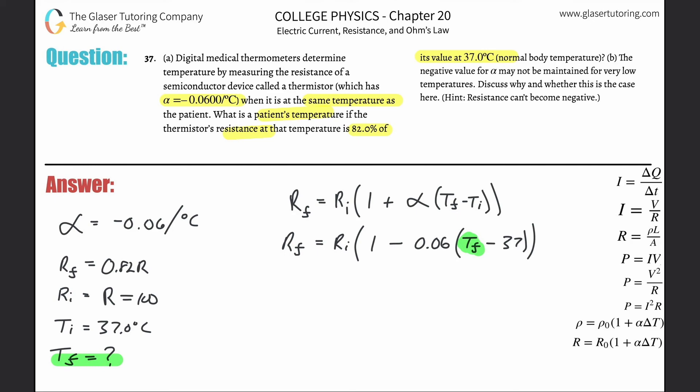Now I realize, I see. I'm going to plug it in, so 0.82R is equal to R, I'm just simply plugging these in for the variables, then 1 minus 0.06 times T_f minus 37.